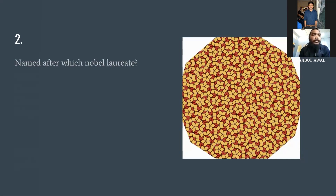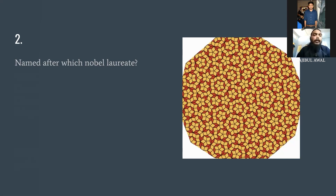Question number two, an easy one: this is a tiling — something-tiling — named after which Nobel laureate? Since this is Quiz 2020, it would be very easy to guess. Remember, it is named after a Nobel laureate, and that connection to 2020 is a giveaway hint. View the photo and take a guess.